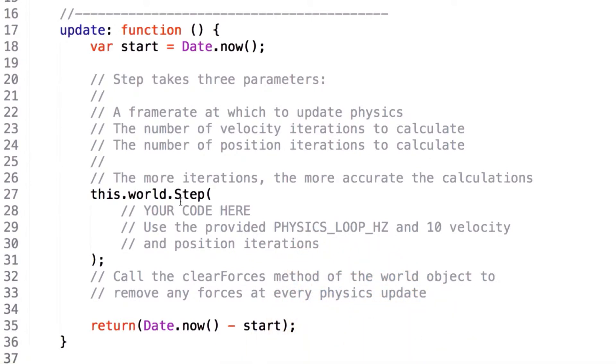Next, we pass two values to the step function, which represent the number of iterations that the physics engine should spend solving collisions and velocities to ensure proper placement.